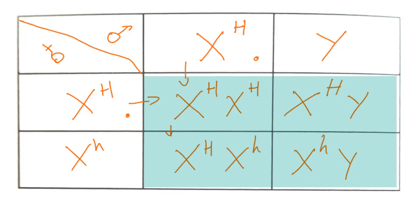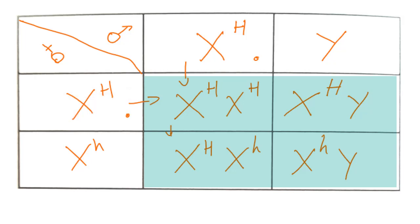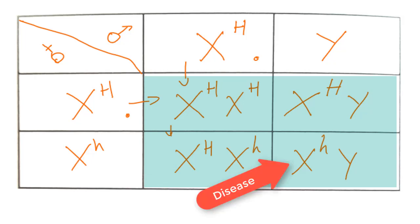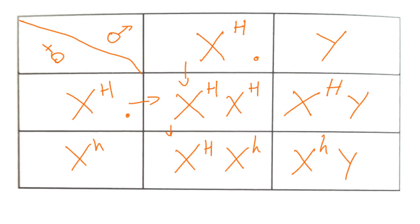So we have four possibilities: a girl with both dominant alleles (X^H X^H); a normal male (X^H Y); a carrier girl with one dominant and one recessive allele (X^H X^h); and a boy with the recessive allele (X^h Y). Because there is nothing to counteract the recessive allele in the boy, he would develop the disease. And that's it for this part of the question.